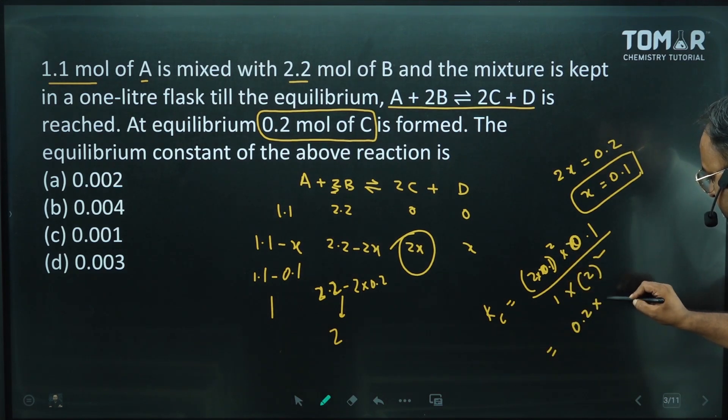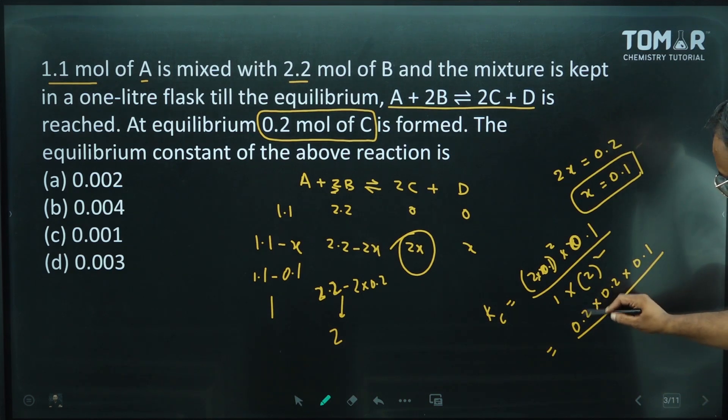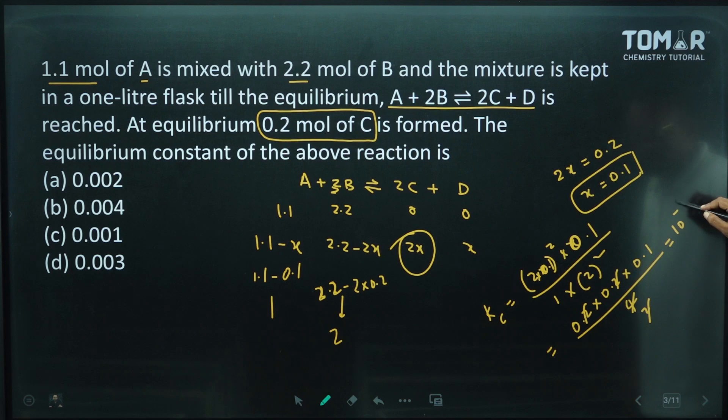This will become 0.2 × 0.2 × 0.2 × 0.1 divided by 4. 2. 2 plus 4. 2 plus 4. Then this will become 10 to the power minus 3.